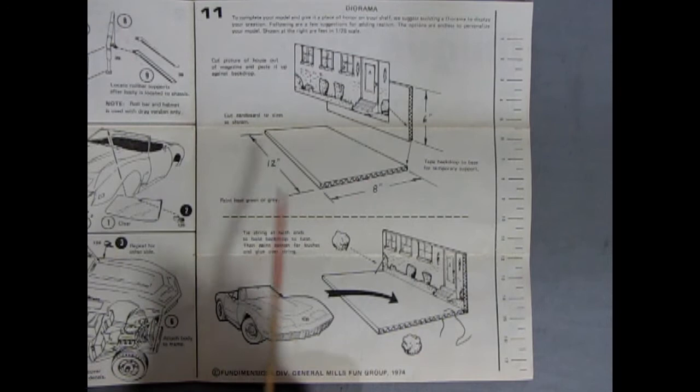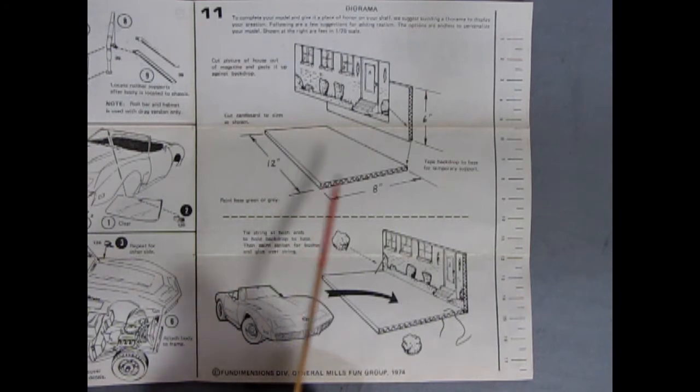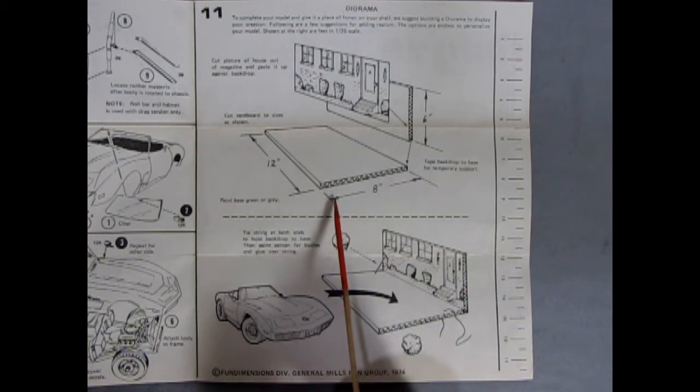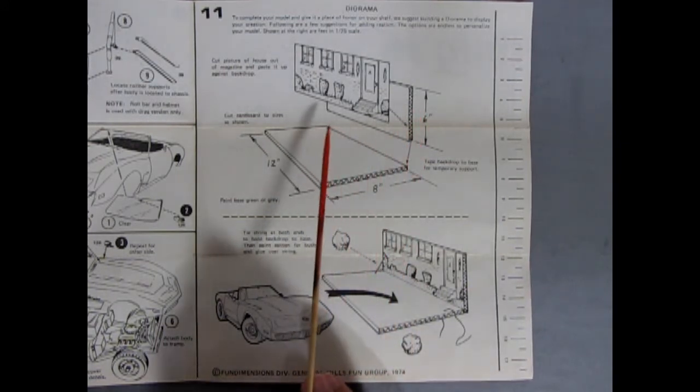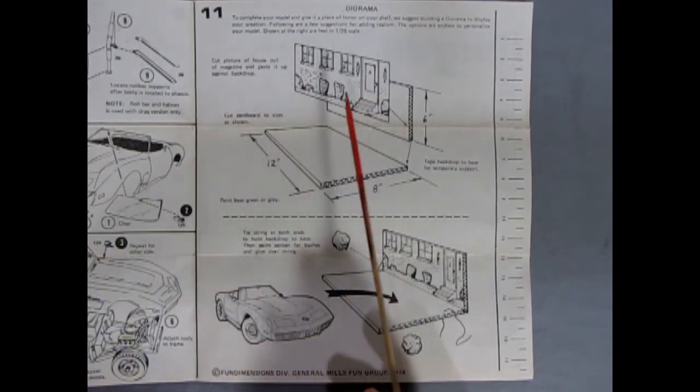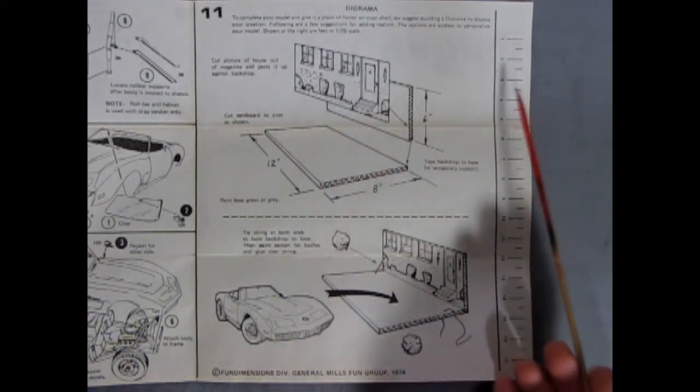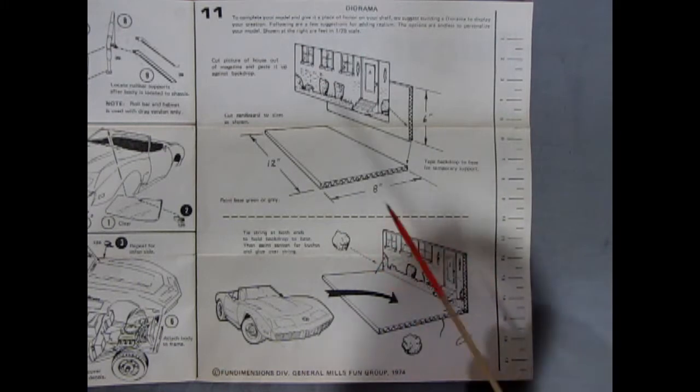It says to cut the cardboard sides as shown so you'd get corrugated cardboard. But now you could use foam core board which is a lot more rigid and I think it's better. So you cut one 12 inches long by 8 inches deep and then 6 inches high in the back by 12 inches long. It says to cut a picture of a house out of a magazine and paste it up against the backdrop. Now you want to make sure it's in scale to the car though, which they do give you some scale here so you can try to figure it out.